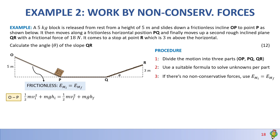Conservation of energy states that kinetic energy initial plus potential energy initial equals kinetic energy final plus potential energy final. The block is released from rest, so the initial kinetic energy is zero. The initial potential energy is not zero because we have a 5 meter height. The block doesn't stop at point P, so the final kinetic energy is not zero. But at point P there is no height, so the final potential energy is zero.